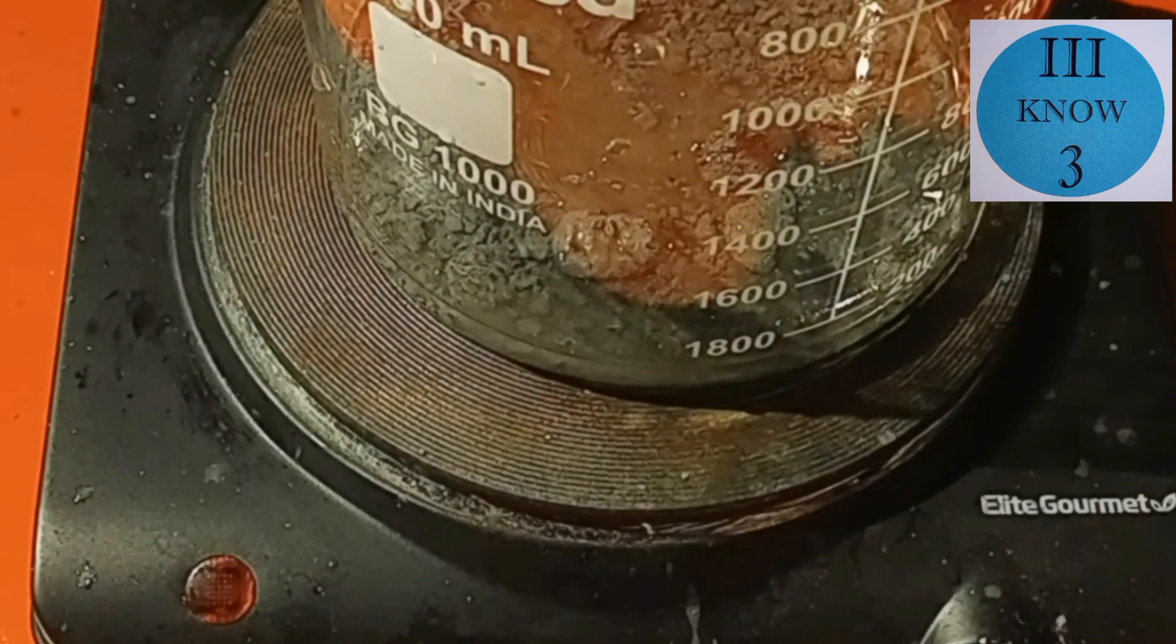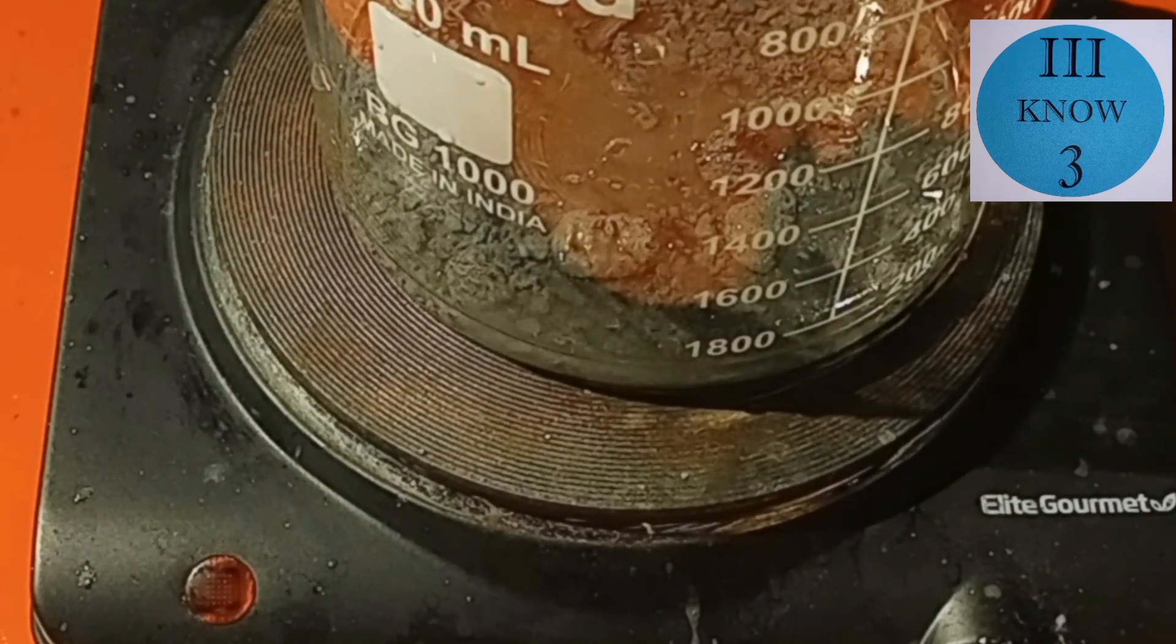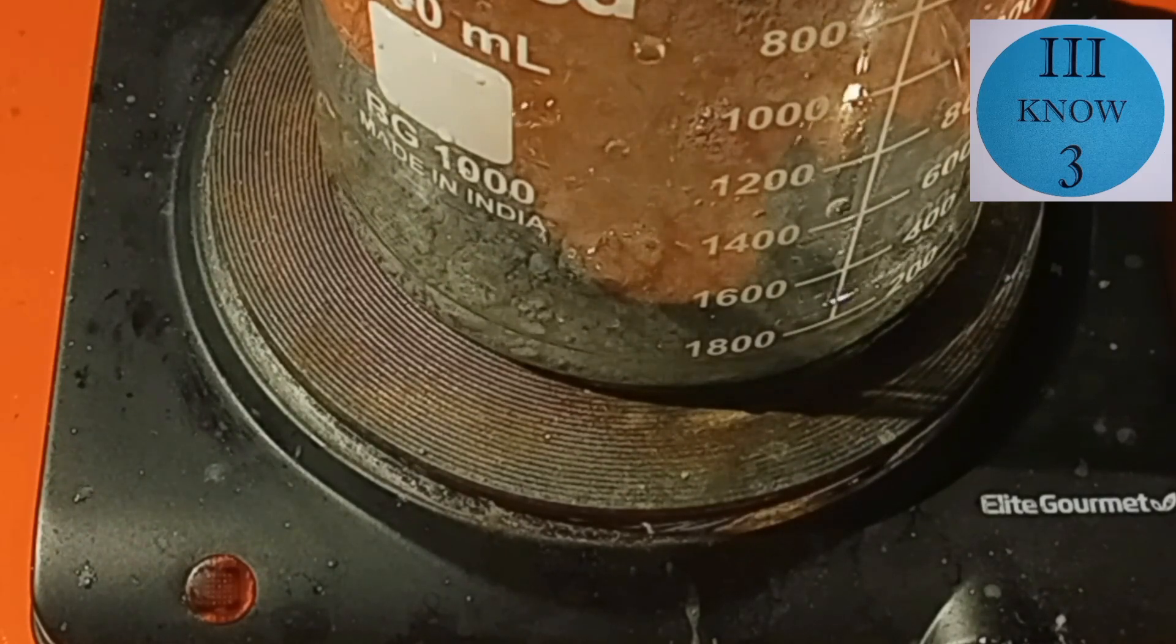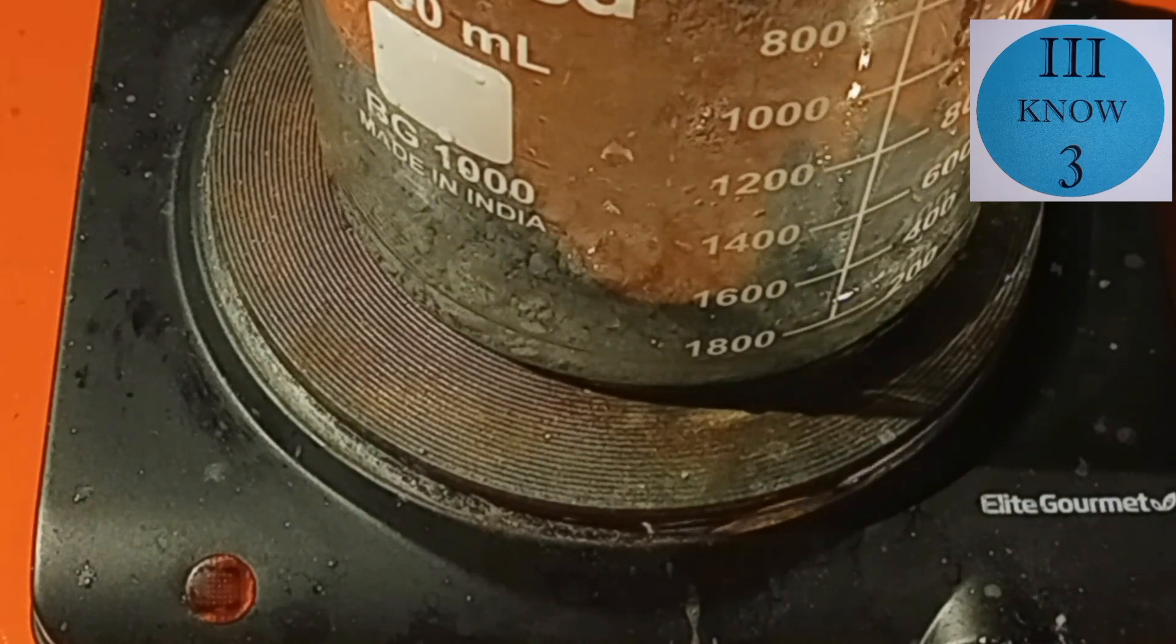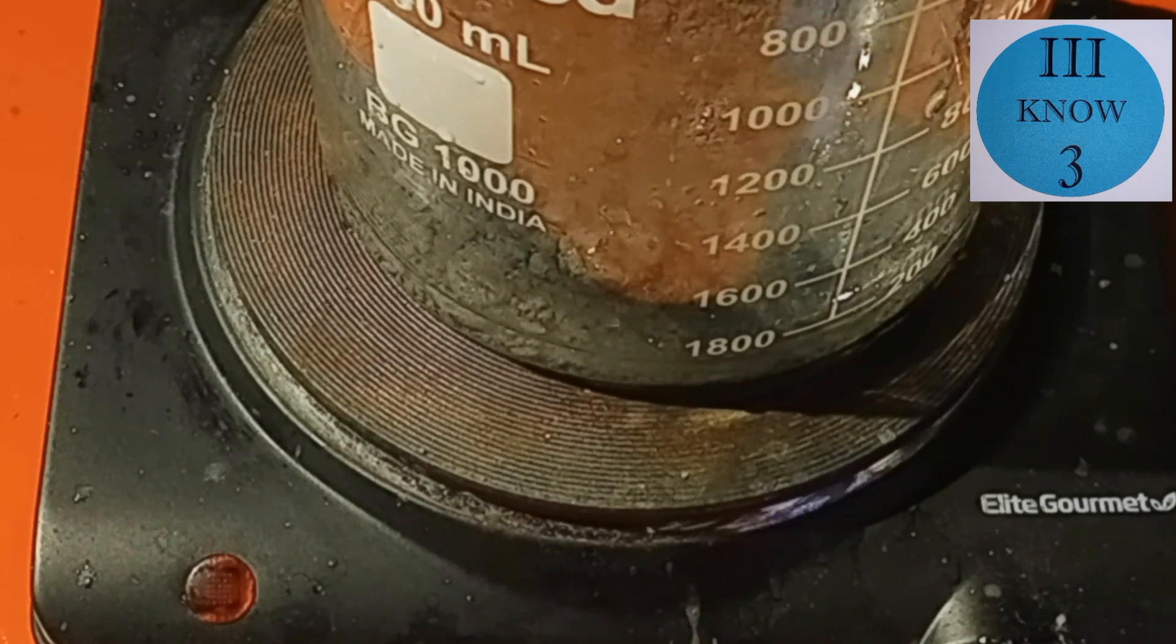And then we're going to add about 100 milliliters of this trans-chem muriatic acid, which is also hydrochloric acid. If you want to know more about the acids I'm using, you can watch my hydrochloric acid versus muriatic acid video.